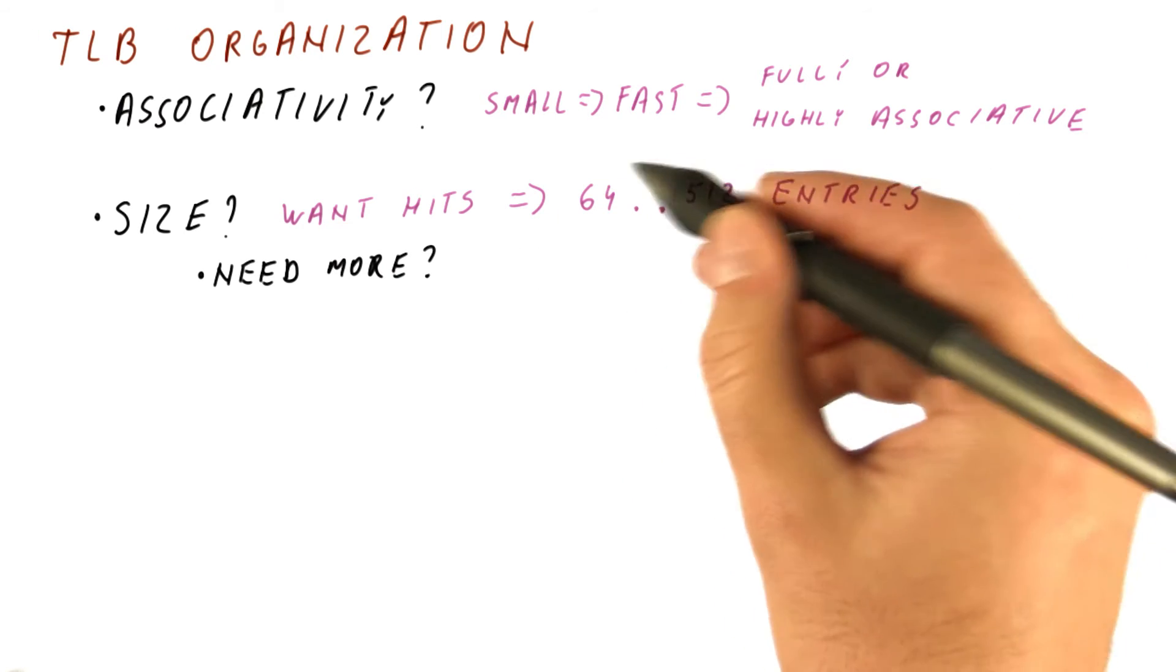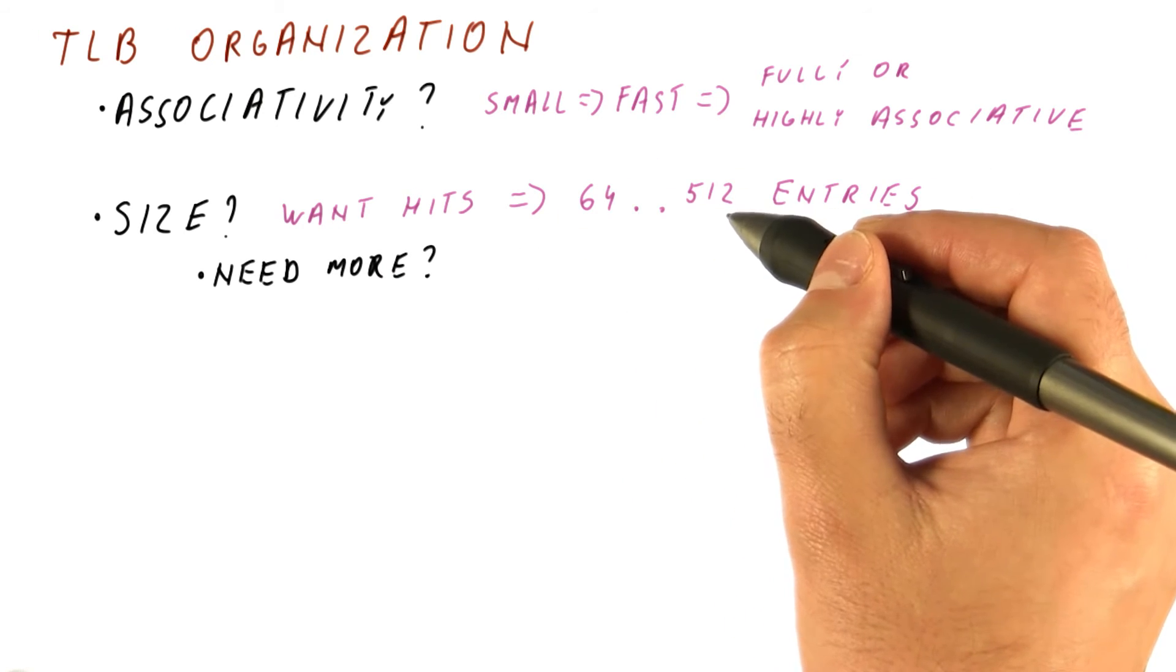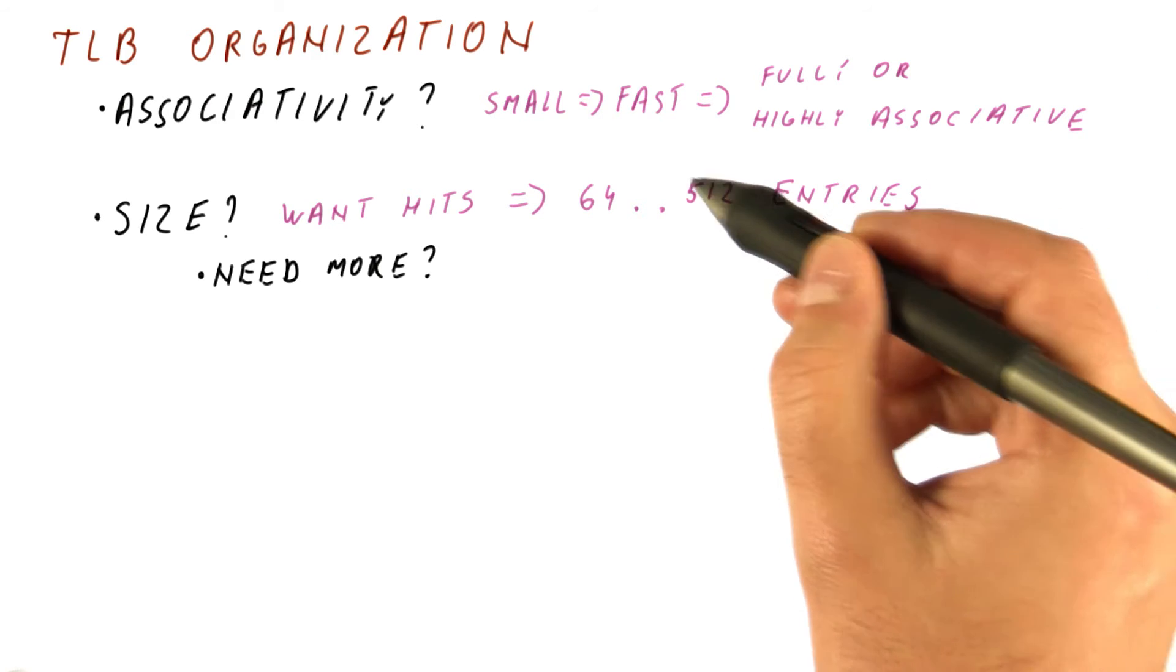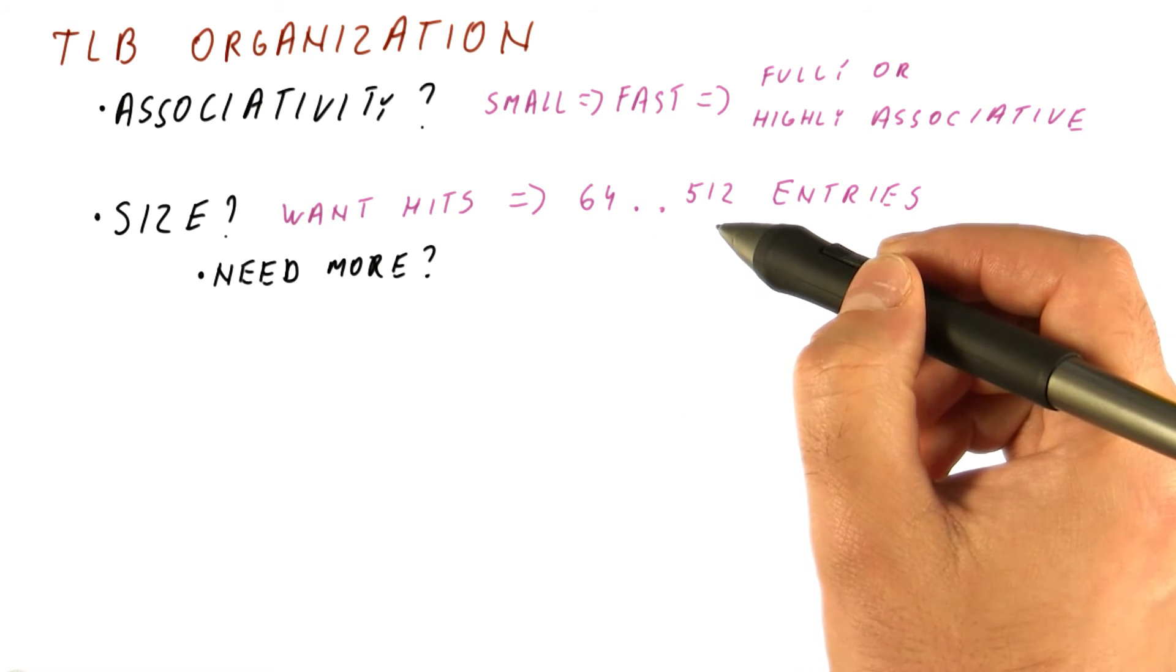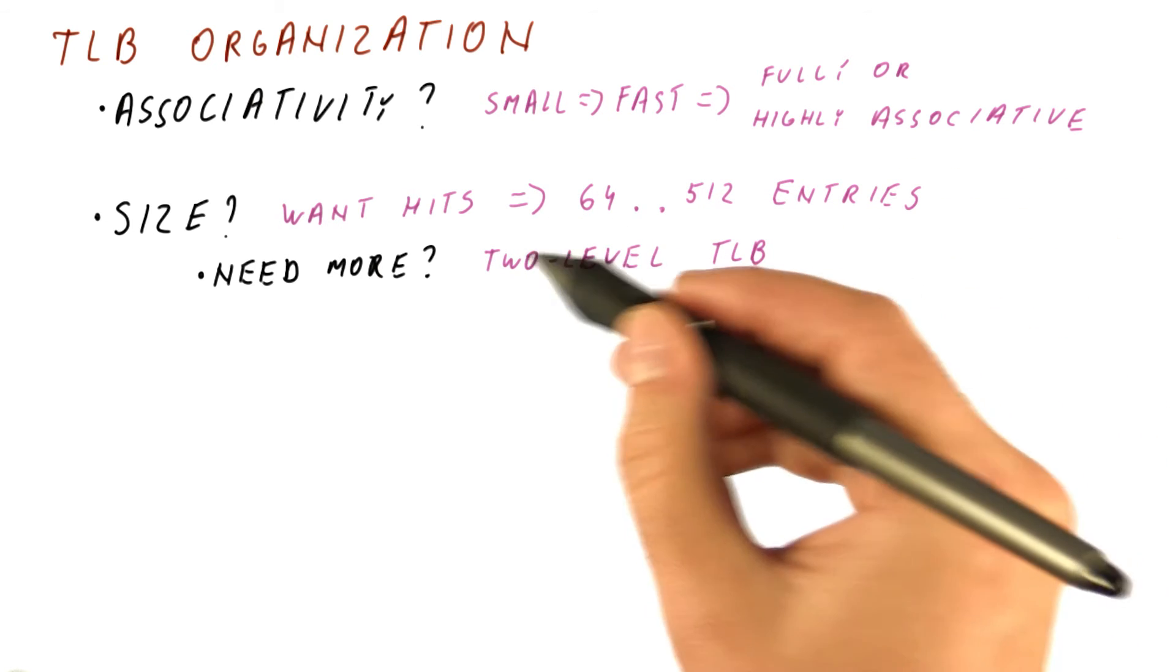What if we need more TLB entries in order to get the hit rate that we want? Well, you don't want it to be too large, because then it's going to become slow. In that case, you want to have a two-level TLB.